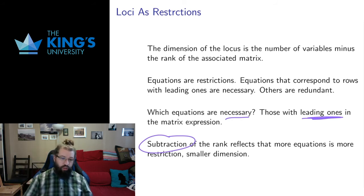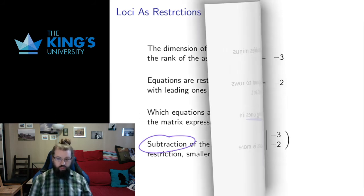Ideally, we start in, say, R7 with three equations. We expect to get a four-dimensional space because we drop from seven to six to five down to four. But maybe we only drop by two if one of them is redundant. Once we get rid of the redundancies, we're still doing that subtraction. Each leading one is an actual restriction, so the number of variables minus the leading ones gives us the dimension of the locus.